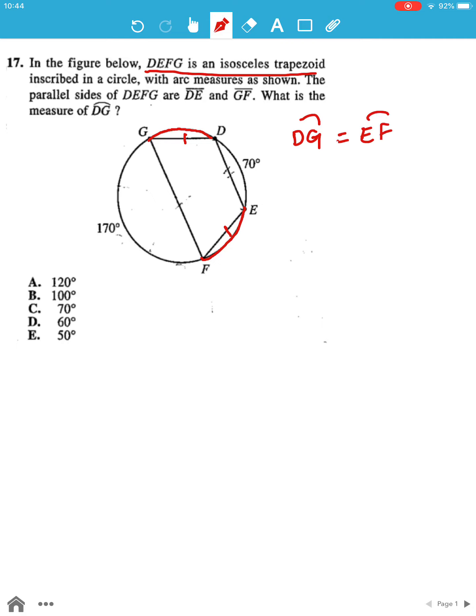Now the measure of the entire circle would be 360 degrees, and we can say that it's a sum of 70, 170, and the two arcs DG and EF. So we can write that as an equation where 170 degrees plus 70 degrees plus DG plus EF is equal to 360 degrees.